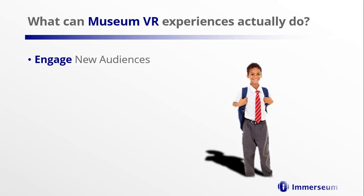In concrete terms, I'd like to introduce you to Jesse. Jesse's a smart kid, top of his class, with a passion for both the arts and the sciences. His teachers expect him to go on to an Ivy League school and someday do great things. He's the kind of visitor your museum should engage with, the kind your museum can best inspire. But there's one problem — Jesse lives 300 miles away from your museum, and it's not likely he'll ever have the chance to come visit. Should your institution write Jesse off as out of reach? At Immersium, we don't think so.